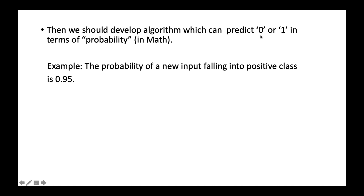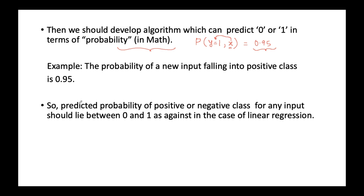So what is the solution? We need to predict 0 or 1 in terms of probability. We say the probability that y equals 1 for any new input x is some value — for example, 0.95, meaning 95% probability that x falls in the positive class. The key idea is predicting the positive or negative class in terms of probability. Since probability lies between 0 and 1, the outcome we want to predict should also lie between 0 and 1.